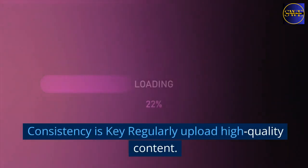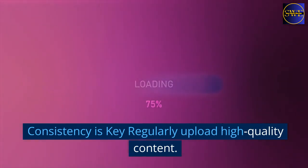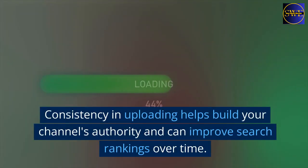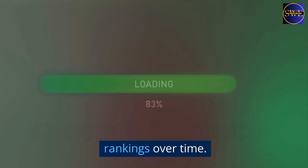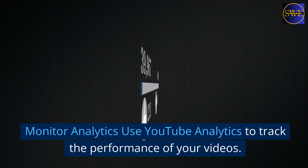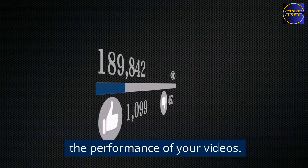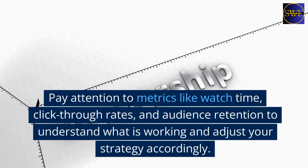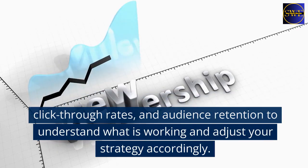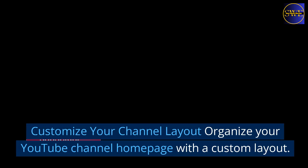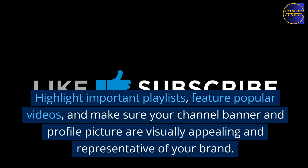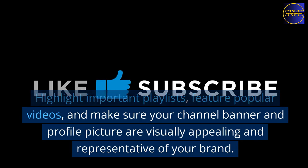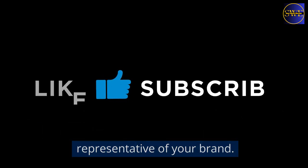Optimize channel metadata: fill out your channel's about section with a concise and informative description of your content. Include relevant keywords and links to your website or other social media profiles. Consistency is key: regularly upload high-quality content. Consistency in uploading helps build your channel's authority and can improve search rankings over time. Monitor analytics: use YouTube analytics to track the performance of your videos. Pay attention to metrics like watch time, click-through rates, and audience retention to understand what is working and adjust your strategy accordingly.